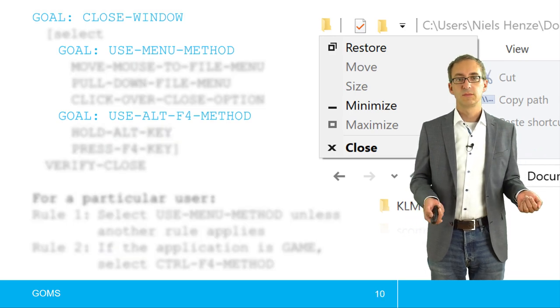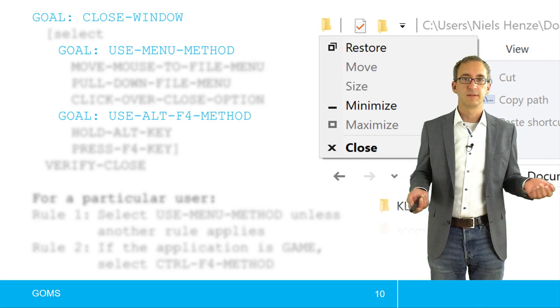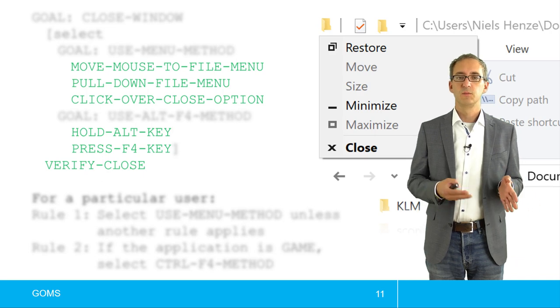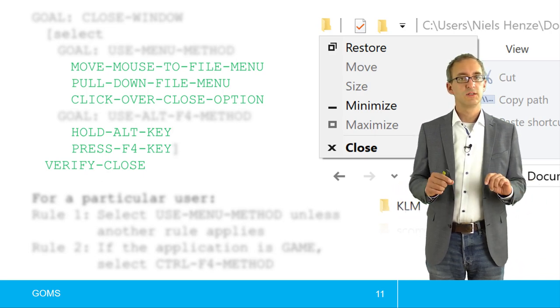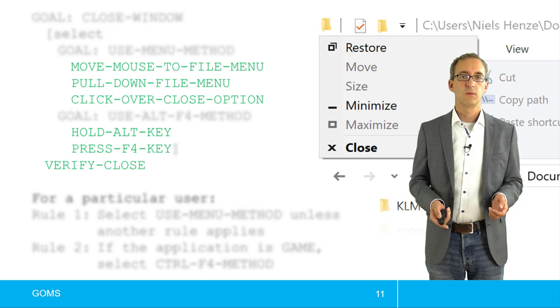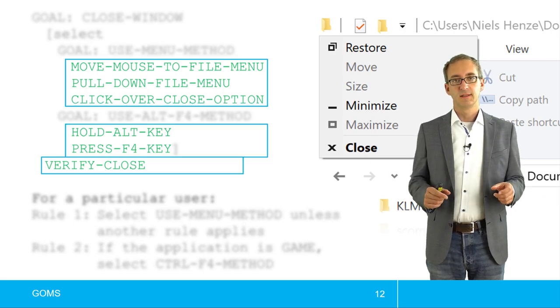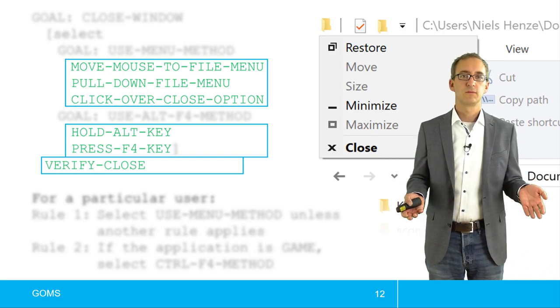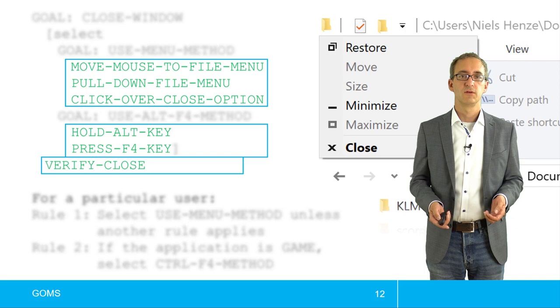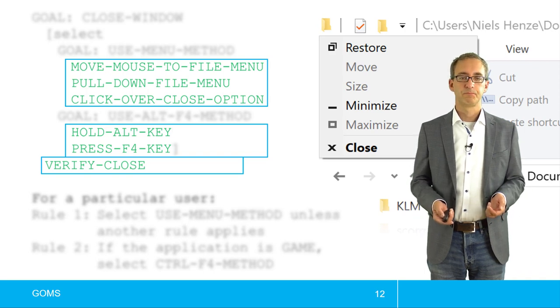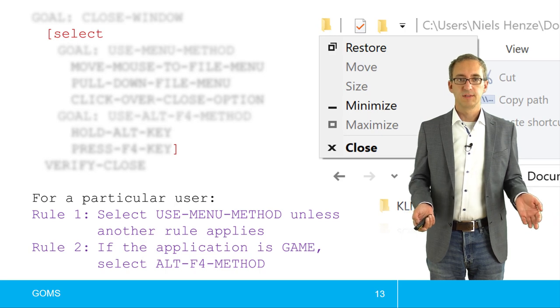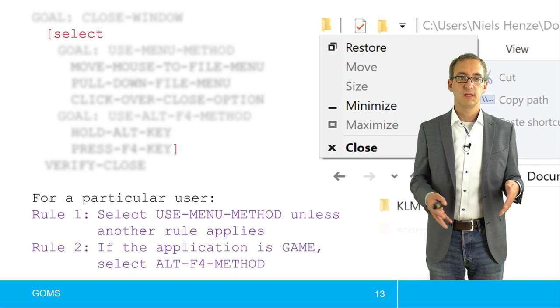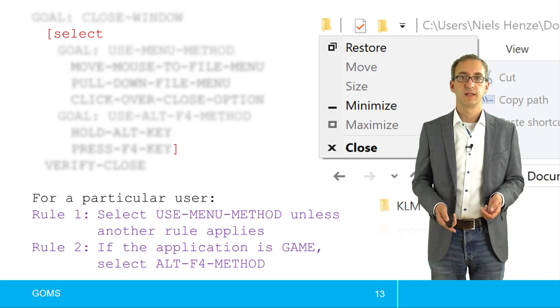And in this basic example, we already have all the different GOMS components. So we have the goals. So we have three of them. And these are just goals. Then we have the operators, things like move mouse to file menu. And each of them, each of these green lines, these are operators. But then we have the methods. And the methods are collections of operators. So we have a total of three methods, with one being very short, the verify close method. And then we have, of course, the selection rules. So we have the statement that now we could select different methods. And then we have the selection rules themselves.